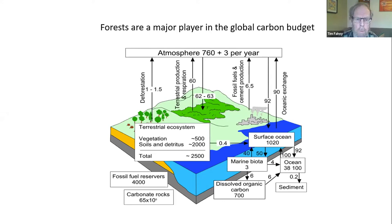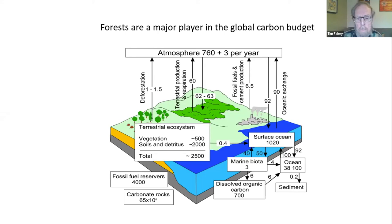I wanted to point out the important role of deforestation, mostly in tropical countries, in adding carbon dioxide to the atmosphere — shown on the left side with the arrow — and also the large role of mostly temperate forests in absorbing some of that carbon dioxide. So the carbon dioxide concentration in the atmosphere is going up a little bit more slowly than it would be if the forests weren't increasing in their stock.